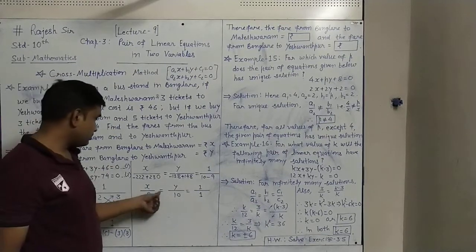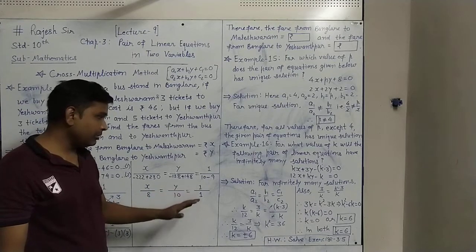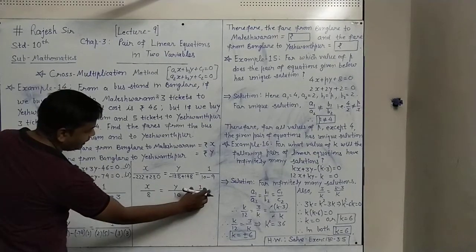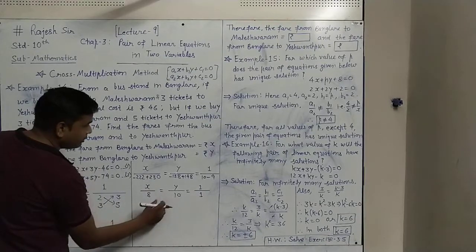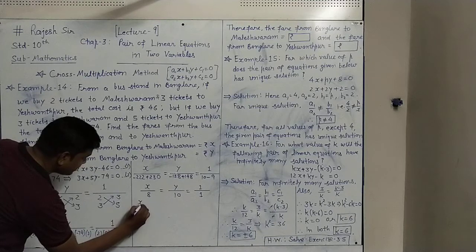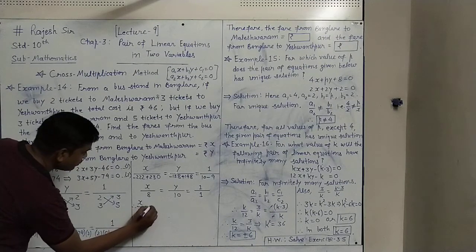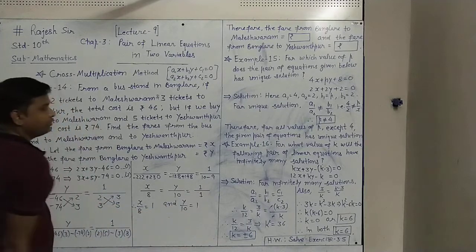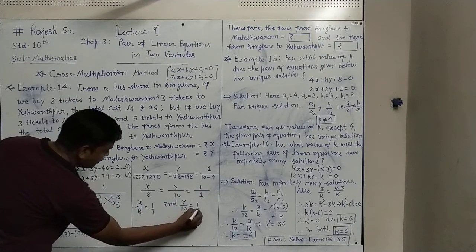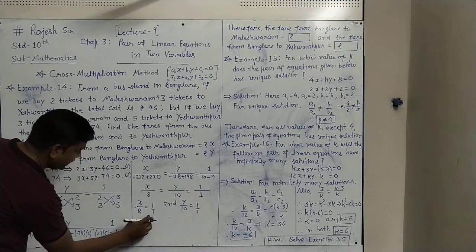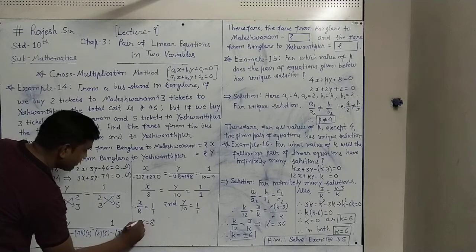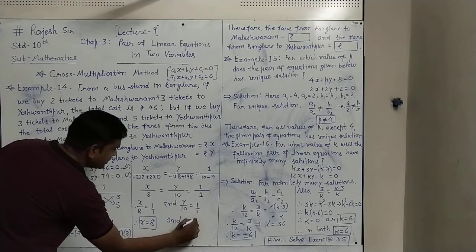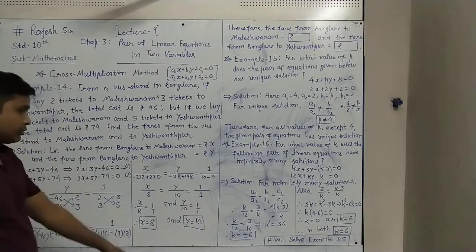Now we compare: X upon 8 equals 1 upon 1, so cross multiplying gives X equals 8. And Y upon 10 equals 1 upon 1, so Y equals 10. Therefore X equals 8 and Y equals 10.